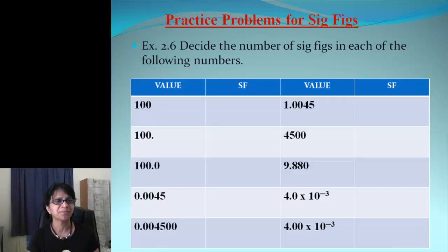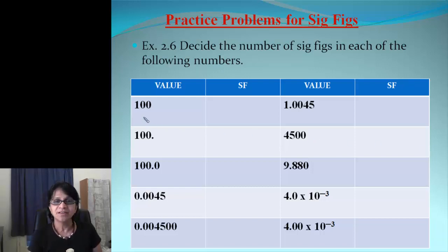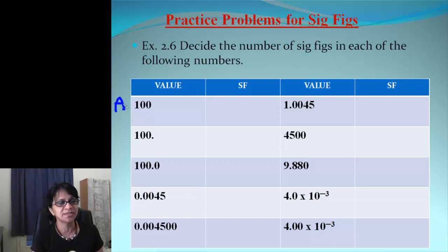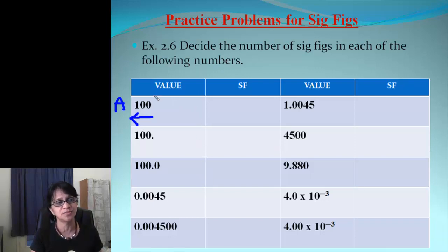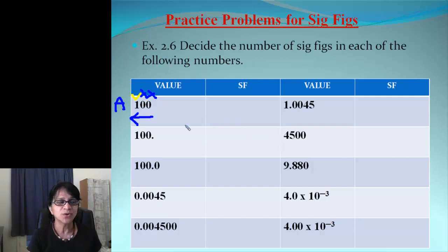Let's do some practice from your notes. The first number is 100. Decimal point is absent, so we go from Atlantic to Pacific — right to left — and count from the first non-zero number. The two zeros don't count, but there is that 1 — so there is only one sig fig.